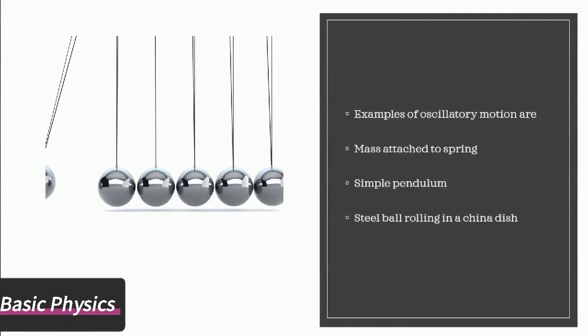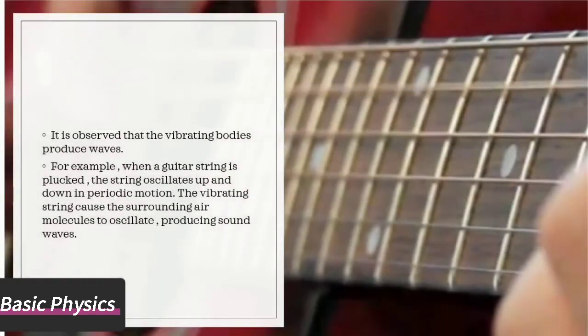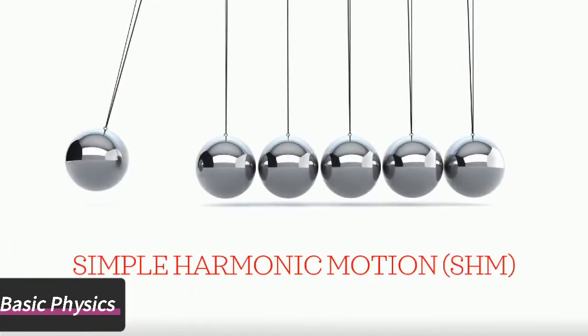It is observed that vibrating bodies produce waves. For example, when a guitar string is plucked, the string oscillates up and down in periodic motion. The vibrating string causes the surrounding air molecules to oscillate, producing sound waves.